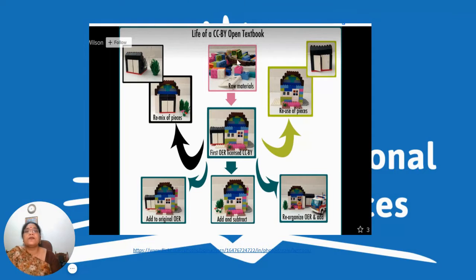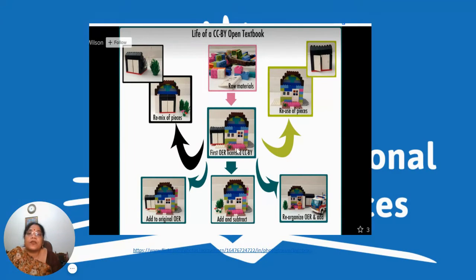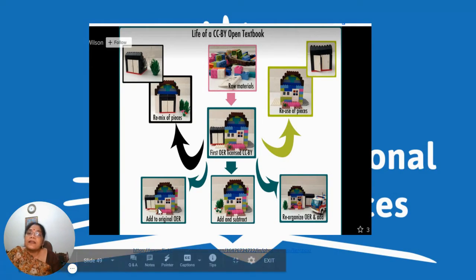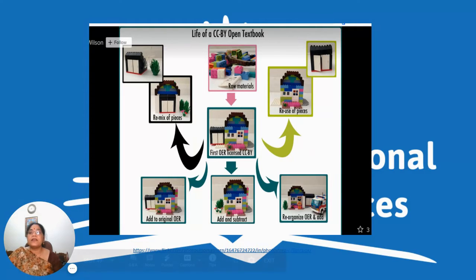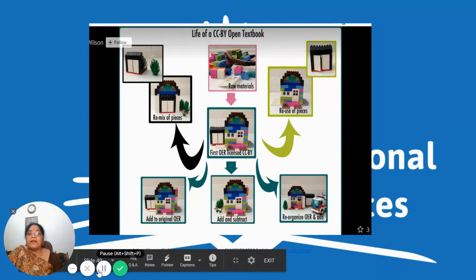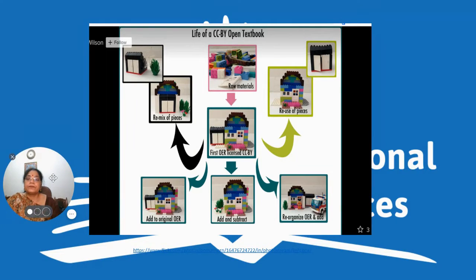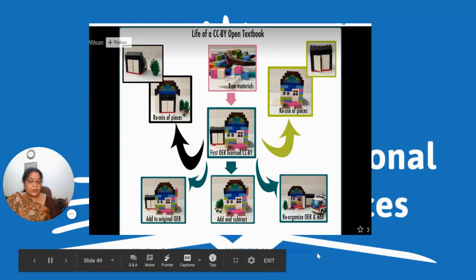Similarly, if you see the lifecycle of a CC BY open textbook, you start with raw material arranged in a particular way — this is the first OER license. If you want to remix it, you can remix the pieces, add something to the original, add or subtract portions, reorganize, and reuse the pieces. These small elements can be reorganized as per the requirement.